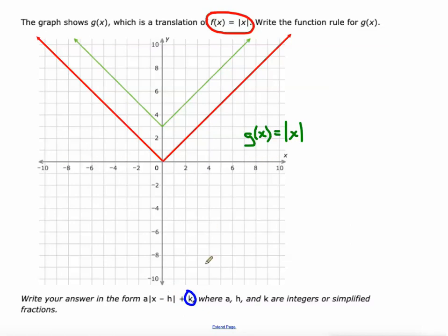It hasn't been slid left or right, so the only thing we're going to add is plus 3. It's just the absolute value of x and then added 3 to it.